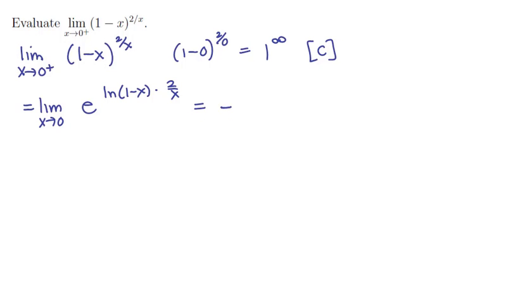And so we'll have e raised to the limit as x tends to 0 of, rearranging a little bit here, 2 over x times ln(1 minus x). And so this expression up here is where the limit is. Let's focus on it instead.